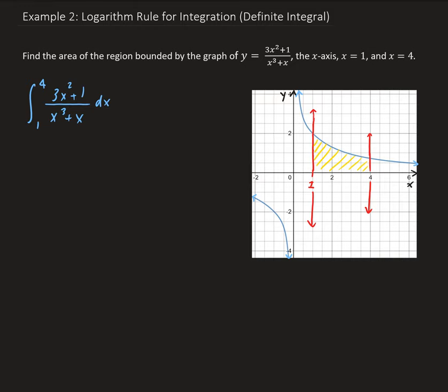So to solve this integral, we're going to use u substitution here, along with the log rule for integration. We're going to let u be equal to the denominator, which in this case is x cubed plus x. And taking the derivative with respect to x, we're going to get 3x squared plus 1 dx.